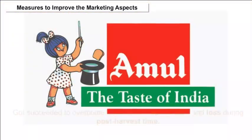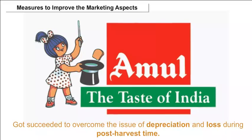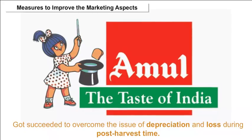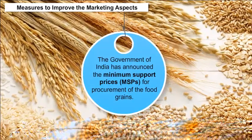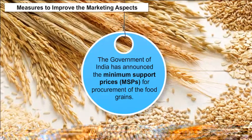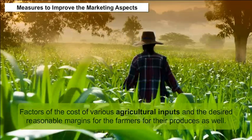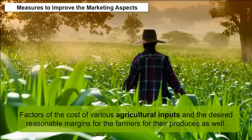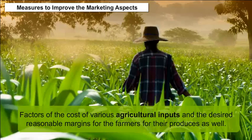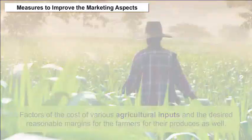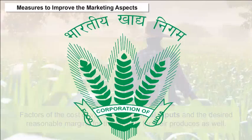In Gujarat, through Amul Limited, it succeeded in overcoming the issue of depreciation and loss during post-harvest time. The Government of India has announced Minimum Support Prices (MSPs) for procurement of food grains, considering the factors of the cost of various agricultural inputs and the desired reasonable margins for the farmers and producers. The Food Corporation of India (FCI), being a nodal agency, works in this category through other governmental agencies.